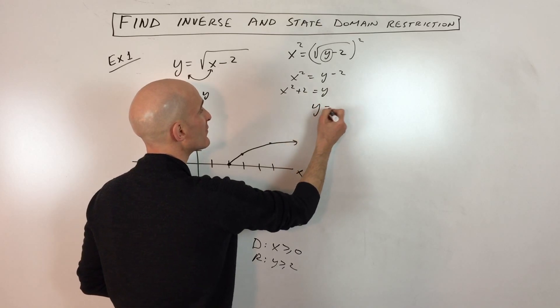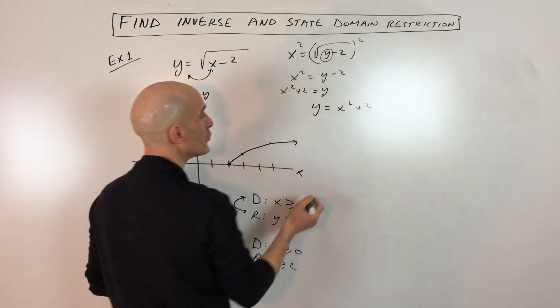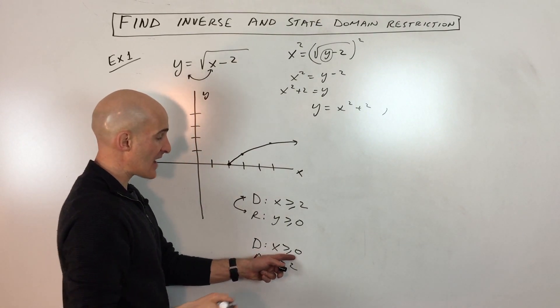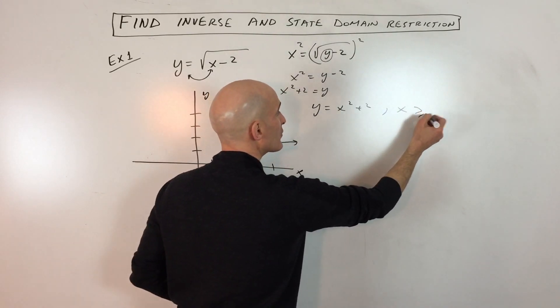And I'm just going to flip this over. So we get y equals x squared plus 2. But I'm just going to put a little comma here. I'm going to state the domain. x has to be greater than or equal to 0.